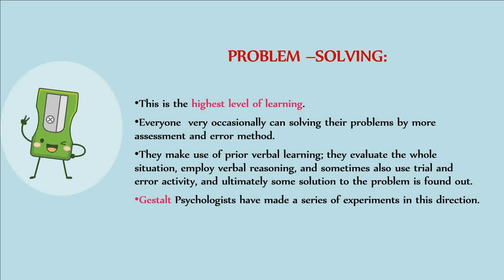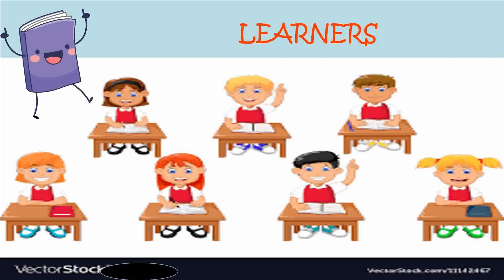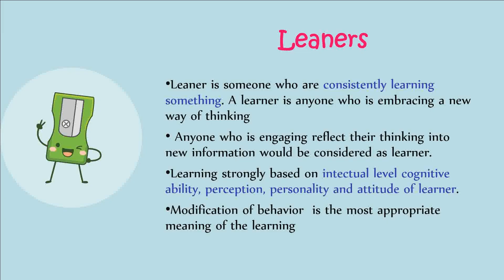Gestalt psychologists have made a series of experiments in this direction. Next, we are going to see about learners. Who are learners? A learner is someone who is consistently learning something — anyone who is embracing a new way of thinking. Anyone who is engaging and reflecting their thinking into new information will be considered a learner. Learning is strongly based on intellectual level, cognitive ability, perception, personality and attitude of the learner. Modification of behavior is the most appropriate meaning of learning.